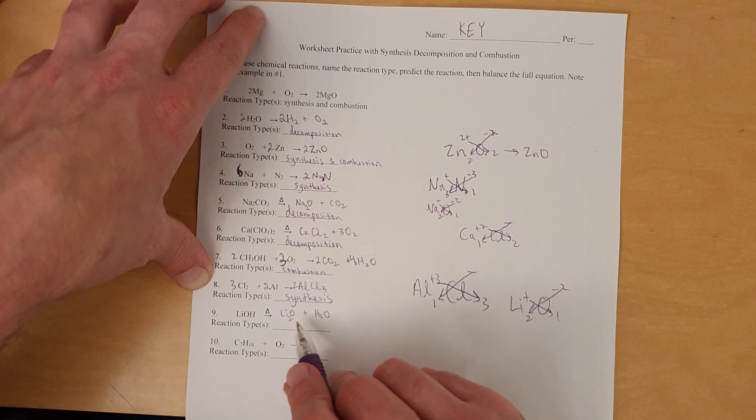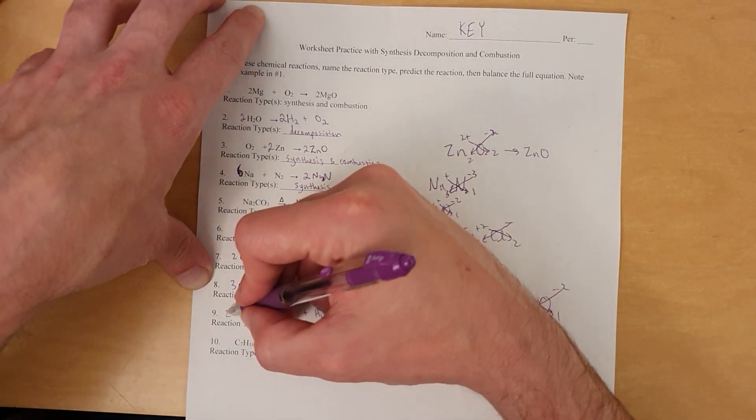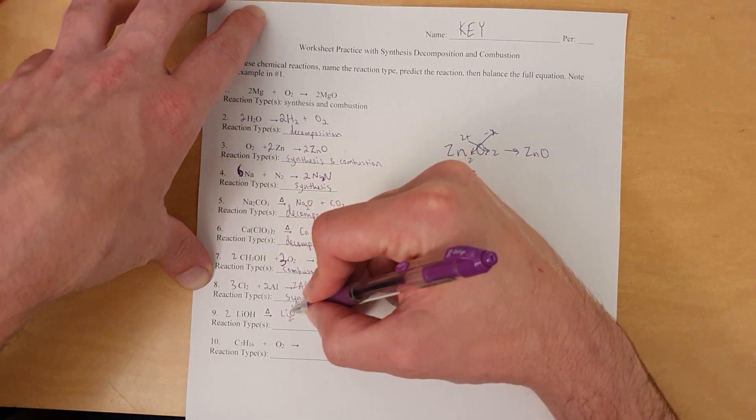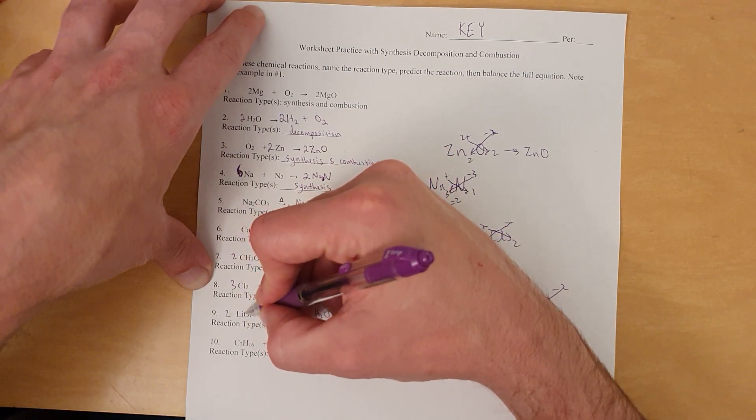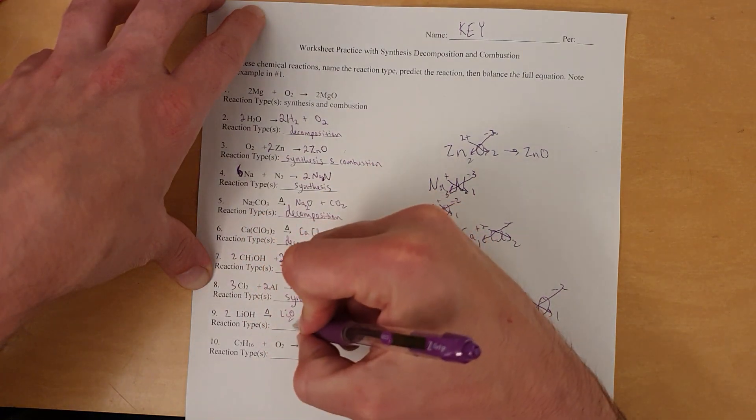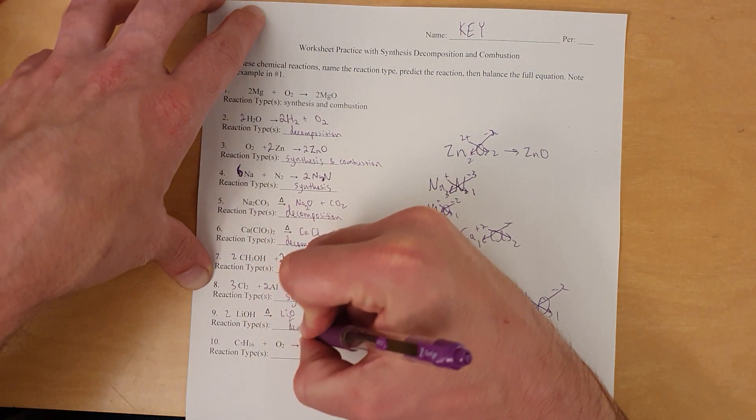And now we just balance. So, 2 lithiums, 2 lithiums. 2 hydrogen, 2 hydrogen, 2 oxygen, 1 here and 1 here. So, that's 2 oxygen on this side. And this means 2 oxygen here. So, that's actually good. Alright. And just to repeat, that is a decomposition.